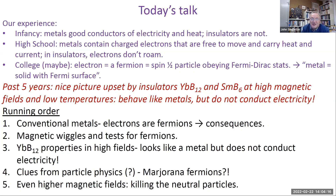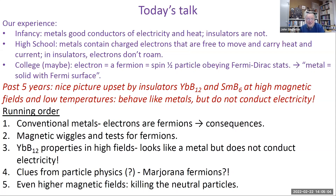From a very young age, we learn that metals are good conductors of electricity and heat, and insulators are not. I found out about this by pushing a piece of Meccano into a main socket when I was six and flying across the room. In high school we learn that metals contain electrons that can move around and carry heat and electricity, while in insulators electrons are more fixed in space. In college we find that an electron is a fermion — a spin-half particle obeying Fermi-Dirac statistics — and that a metal is a solid with a Fermi surface. But for the past five years this picture has been upset by insulators like ytterbium dodecaboride, which in high magnetic fields and low temperatures behave like metals but don't conduct electricity.